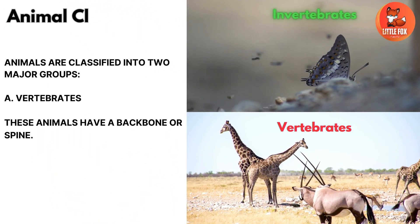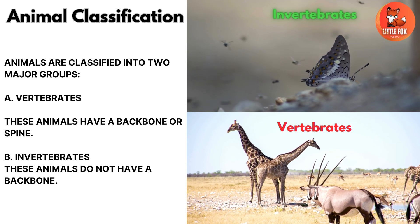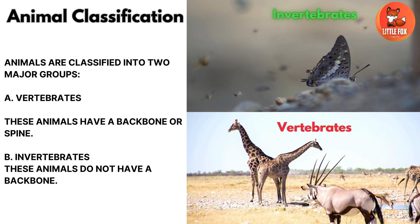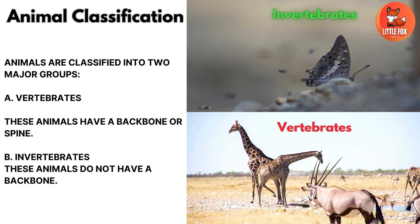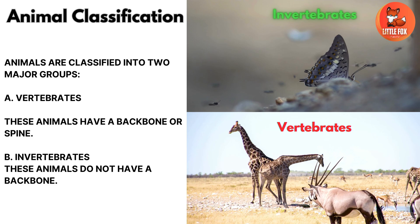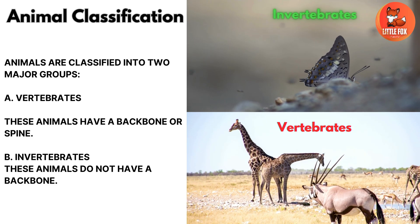Animals are classified into two major groups. They are vertebrate animals and invertebrate animals.